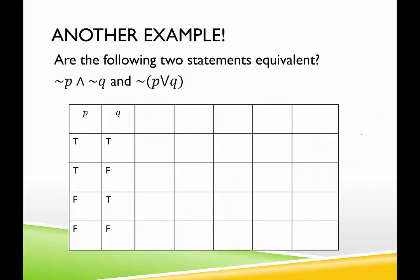Let's try this again. Are these two statements equivalent? Pause the video and tell me if they're equivalent or not. For statement 1, I need negations: not P, not Q, then not P and not Q. For statement 2, I need P or Q, and then the negation of that, not (P or Q).